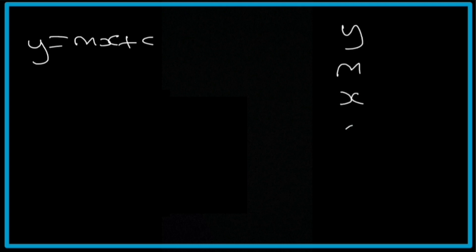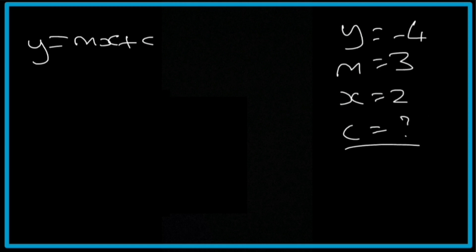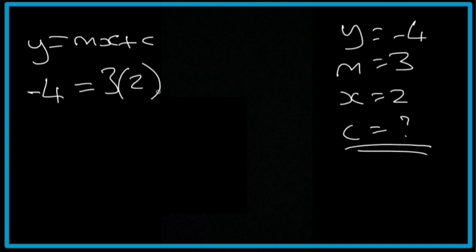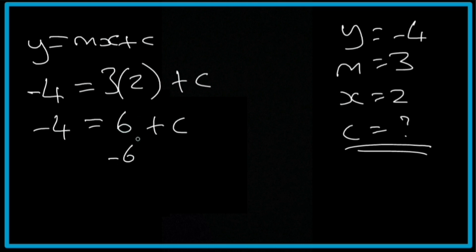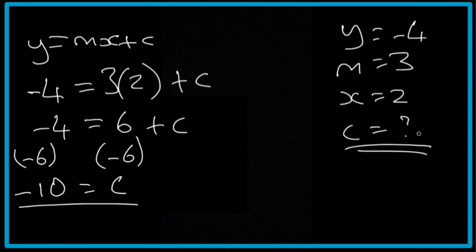So y = mx + c, with values: y = -4, m = 3, x = 2, and c is what we're trying to find. Substituting these values into the equation: -4 = 3 × 2 + c. Expanding: -4 = 6 + c. We need c on its own, so we subtract 6 from both sides: -4 - 6 = c, giving us c = -10.